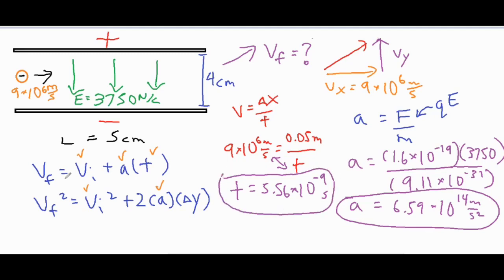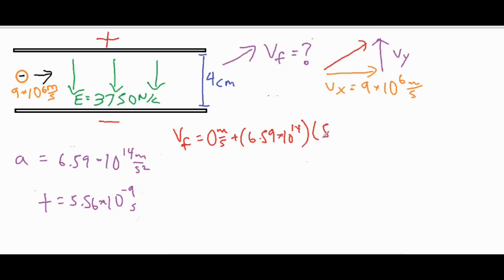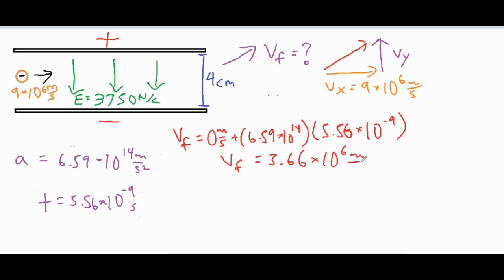Now we have the two things we needed — acceleration and time — and we can plug them into our kinematic formula. The final velocity equals the initial velocity (which is zero in the vertical direction) plus the acceleration of 6.59 times 10 to the 14th times our time of 5.56 times 10 to the negative 9th. That gives us our final velocity in the y direction of 3.66 times 10 to the 6th meters per second.